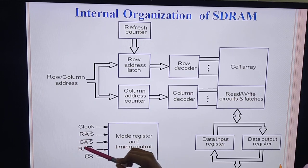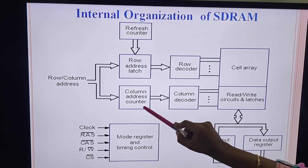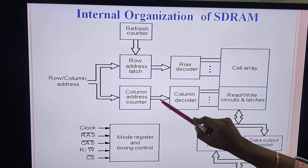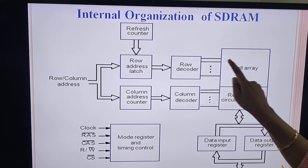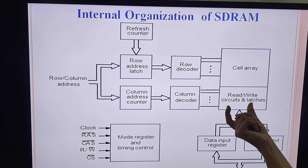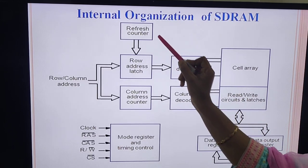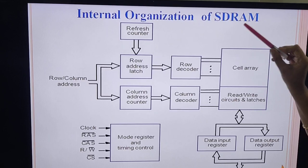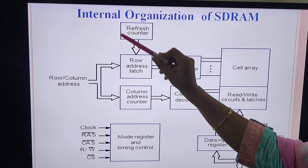All the cells in that selected row are stored in a read/write latch. Next, when we apply a CAS (column address strobe) signal, the lower column address is given to the column address counter, which provides input to the column decoder. The column decoder selects one particular column, and that data is given to a data output register, then placed on the data bus. There is also a refresh counter, because since this is a dynamic RAM, we have to keep refreshing the cells periodically, otherwise the content will be lost.